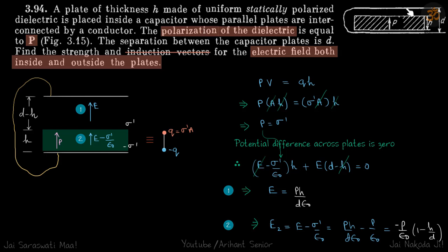In this problem we are given two conducting plates which are connected with a wire, and in between those plates we have kept a dielectric which is uniformly polarized, and polarization vector is P. We need to find the electric field inside and outside this dielectric. Our approach will be quite simple: we'll assume some value of E, relate that E to the E inside the dielectric, and because the potentials are the same, we'll do E·dr from one plate to the other and set that equal to zero.